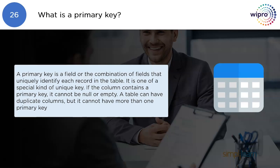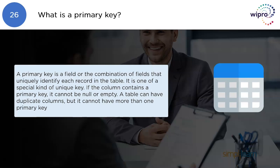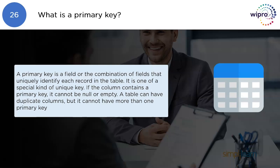What is a primary key? A primary key is a field or combination of fields that uniquely identifies each record in the table. It is a special kind of unique key. If a column contains a primary key, it cannot be null or empty. A table can have duplicate columns, but it cannot have more than one primary key.